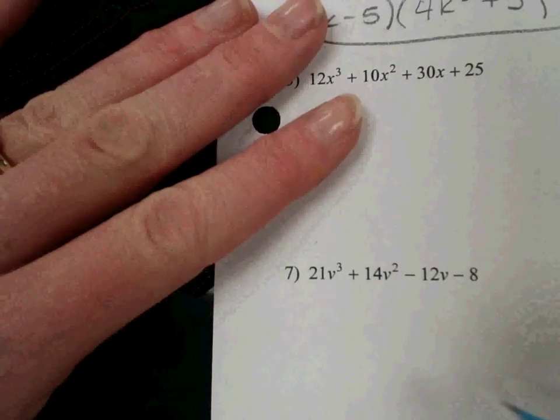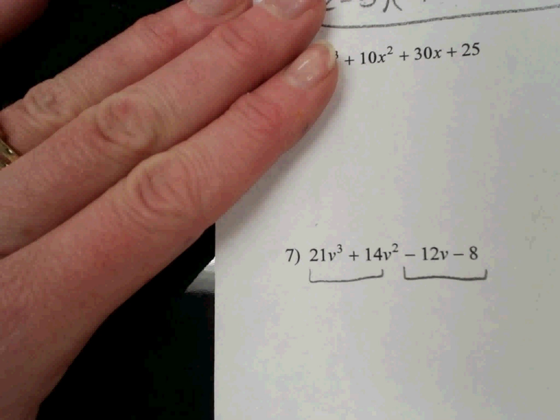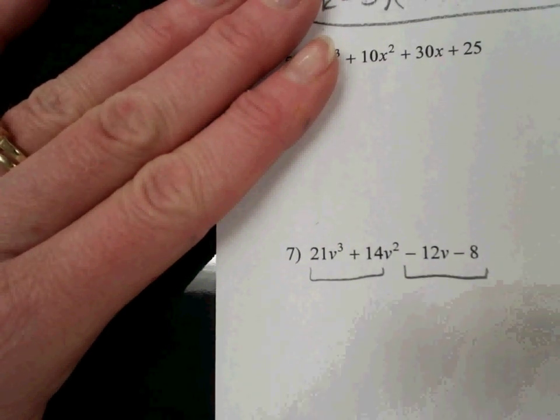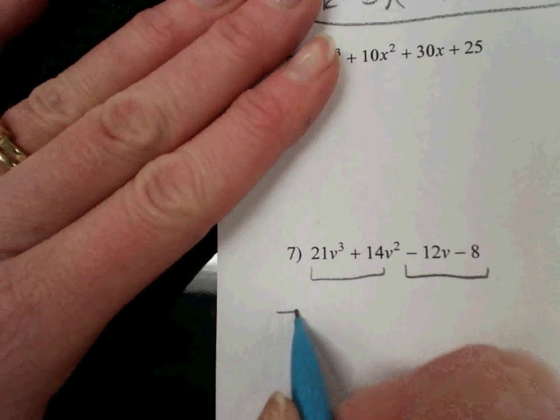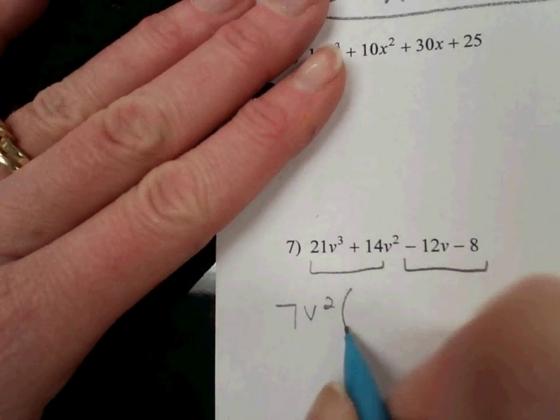I'm going to skip to number 7. Since there's some minus signs in there, it can trip us up sometimes. So we have the two groups. For 21v³ and 14v², the GCF would be 7v².